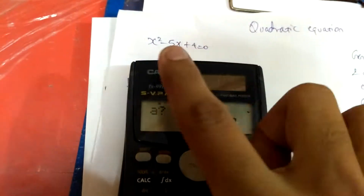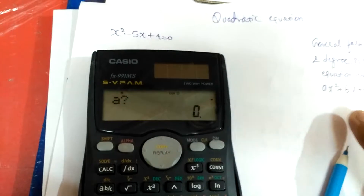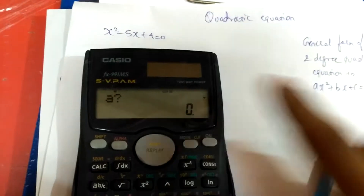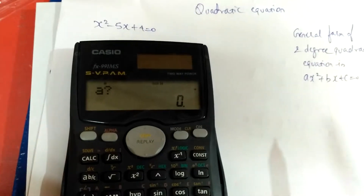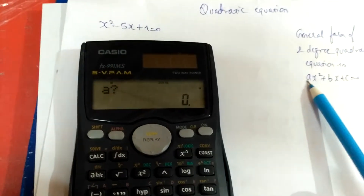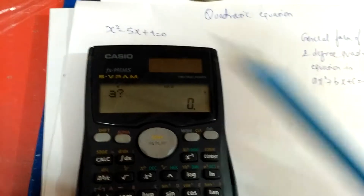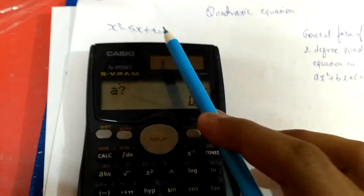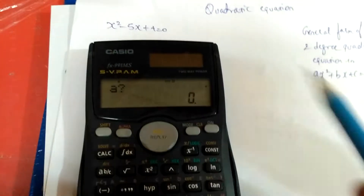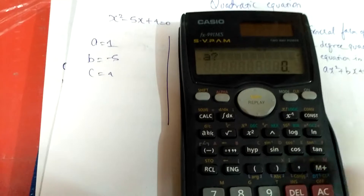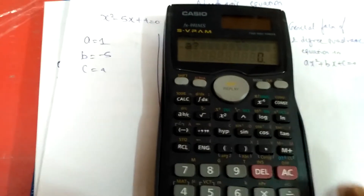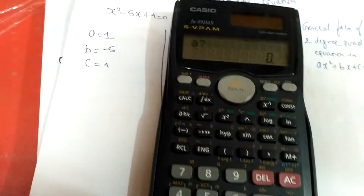Now if you compare these two equations — the general form of a quadratic equation and the question written here — you can see the value of a is equal to 1, the value of b is equal to minus 5, and the value of c is equal to 4. I have already written here a is equal to 1, b equal to minus 5, and c equal to 4. So according to that we will insert the values.